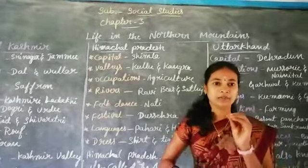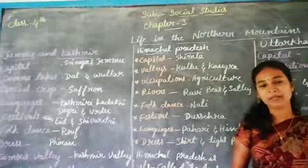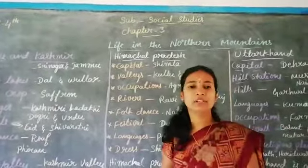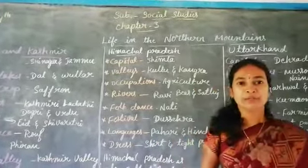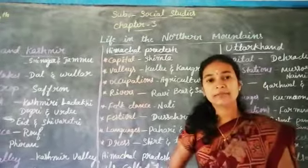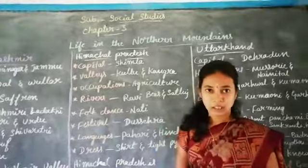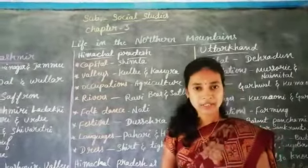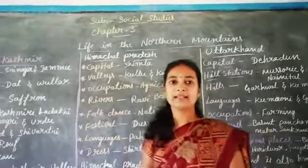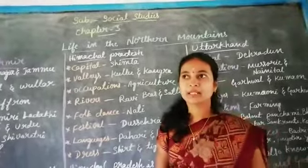Last class we discussed about Jammu Kashmir and Himachal Pradesh. The Northern Mountains is one of the physical divisions of India. There are five major physical divisions of India: the Northern Mountains, the Northern Plains, the Southern Plateau, the Western Desert, and the Coastal Plains and Highlands.